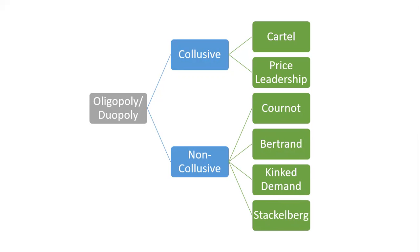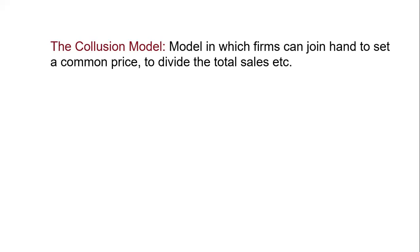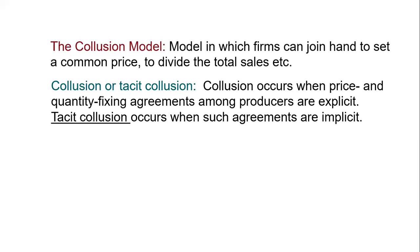In this lecture, we shall briefly discuss cartels, price leadership, and the Kinked Demand Curve models. As we already discussed, cartels and price leadership are examples of collusive models, and collusive models are those in which firms take price and output decisions jointly.